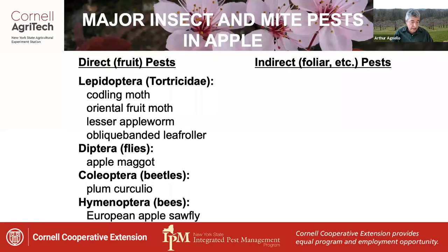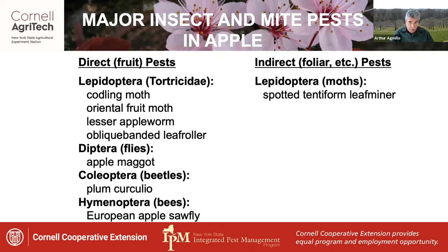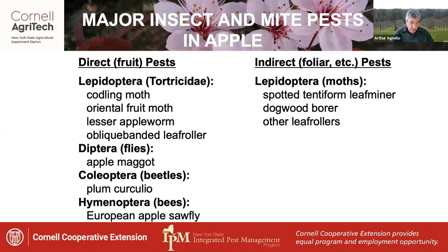Indirect pests attack other parts of the tree, like the foliage, branches, trunk, and roots. This group also contains some moths, such as spotted tentiform leaf miner and dogwood borer, as well as other borers such as black stem borer, which is a beetle, and a number of other leaf rollers. New York actually has several dozen native leaf roller species that can be found in apples, although most are not typically pests.